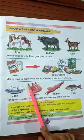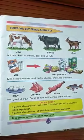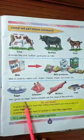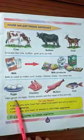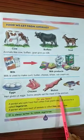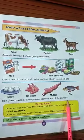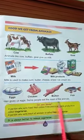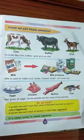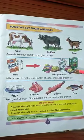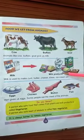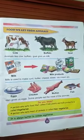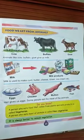Milk से बनी cheese खानी चाहिए। Animals से सिर्फ दूध ही नहीं, और भी चीज़ें मिलती हैं। Hen gives us eggs. Some people eat the meat of animals जैसे chicken, mutton, fish — ये सब भी हमें animals से प्राप्त होते हैं।